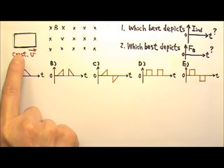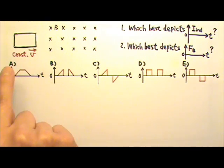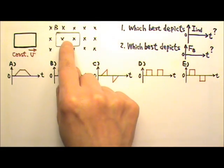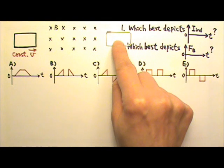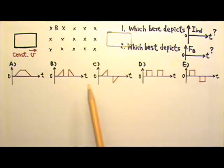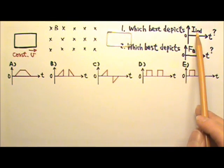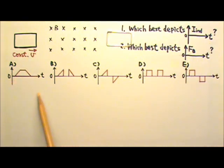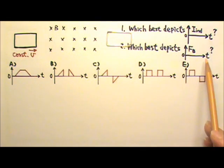A rectangular conducting loop is moved at a constant velocity to the right from a region with no magnetic field, to a region with uniform magnetic field, and then out into another region with no magnetic field. Which of these graphs best depicts the induced current in the wire loop as a function of time? Which of these graphs best depicts the magnetic force acting on the loop as a function of time?